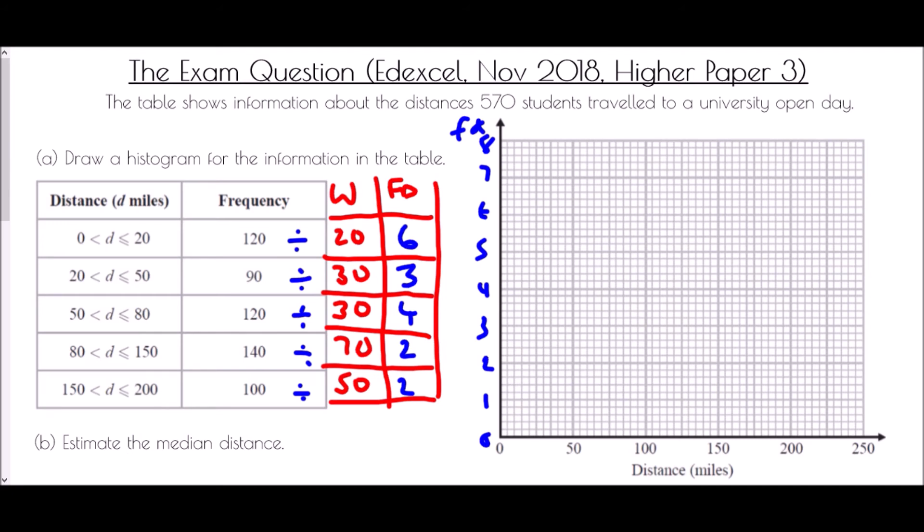And so then we need to draw the actual diagram. With our first group it went from 0 to 20 and so we just need to check our little spacing here that will be 4 squares across. So from 0 to 20, 4 squares across and that needs to go up to a value of 6. Then our next bar would be from 20 to 50 but that one needs to go to a height of 3.